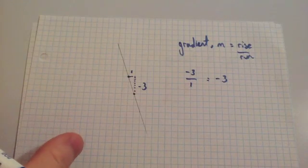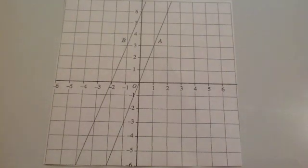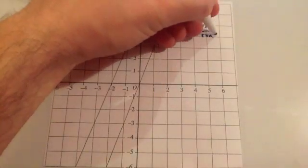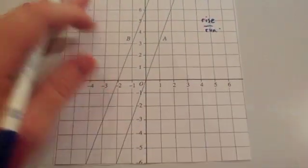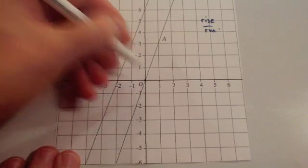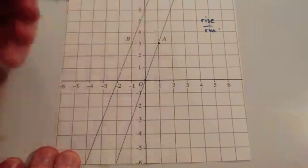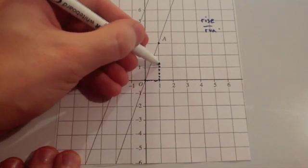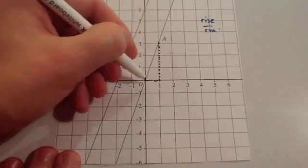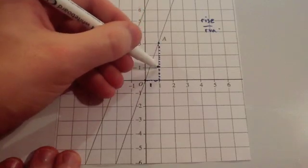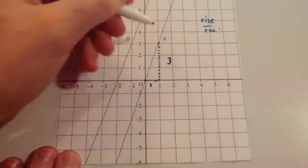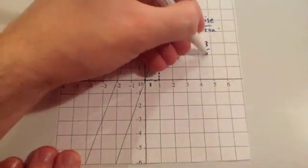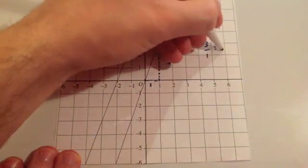Let's look at some exam questions. We're asked to calculate the gradient of line A. Gradient is rise divided by run. Choose two corners — the line clearly goes through the origin and through another point. Make a little right-angled triangle. It goes 1 across, so the run is 1, and the rise is 3. The gradient is rise 3 divided by run 1, which equals 3.